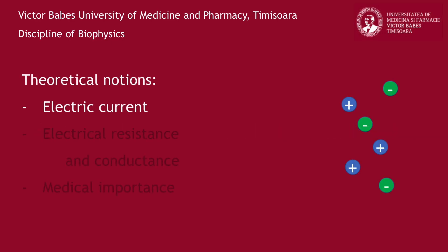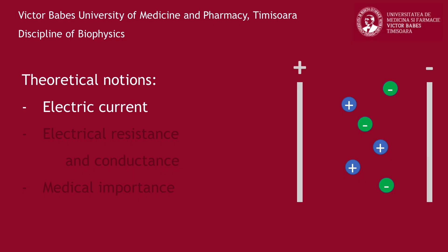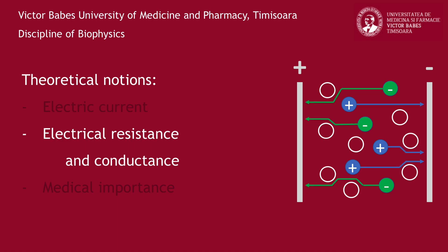An electric current is created by the orderly movement of charged particles, such as electrons or ions, under the action of an electric field. However, in most mediums, this movement is hindered by obstacles. The physical quantity that characterizes the property of mediums to oppose the current flow is called electrical resistance.